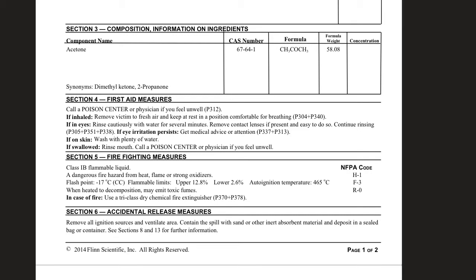Number five: firefighting measures. Firefighters would need to know this is a flammable liquid — it says dangerous fire hazard from heat, it's a strong oxidizer. In case of emergency use a tri-class dry chemical fire extinguisher. There's also an NFPA code here which I'll cover in a different lesson. Section six: accidental release measures. If I spill acetone in the lab, I want to remove all ignition sources and ventilate the area. Contain the spill with sand or another inert absorbent material — I'm not supposed to just wipe it up with a paper towel. I need to absorb it and then throw it away.